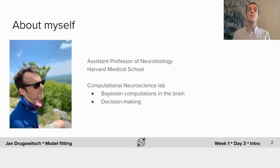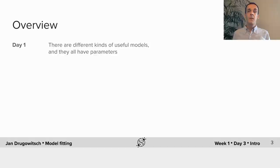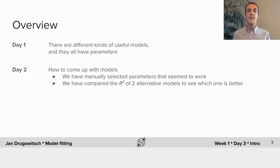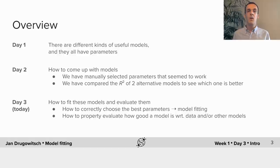To give you an overview: during day one we've seen that there are different kinds of useful models and that they all have parameters. During day two we saw how we come up with models, and we've manually selected parameters that seem to work and compared the R-squared of two alternative models to see which one is better. Today on the third day we will learn about how to choose the best parameters by model fitting and how to properly evaluate how good a model is with respect to data and with respect to other models.